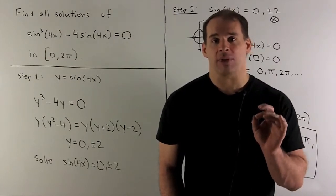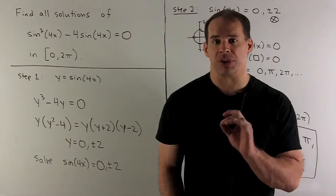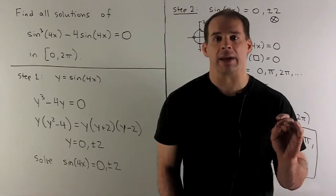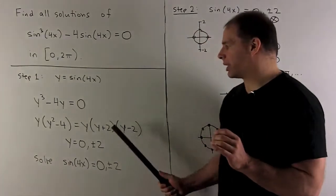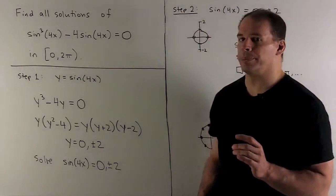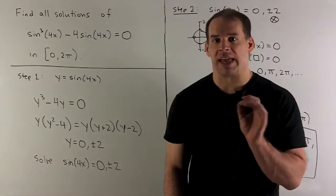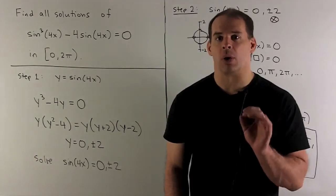We have y³ - 4y = 0. I factor out a y, that leaves me with y² - 4, and that further factors as (y + 2)(y - 2). If I set that equal to 0, I get y = 0 or ±2.